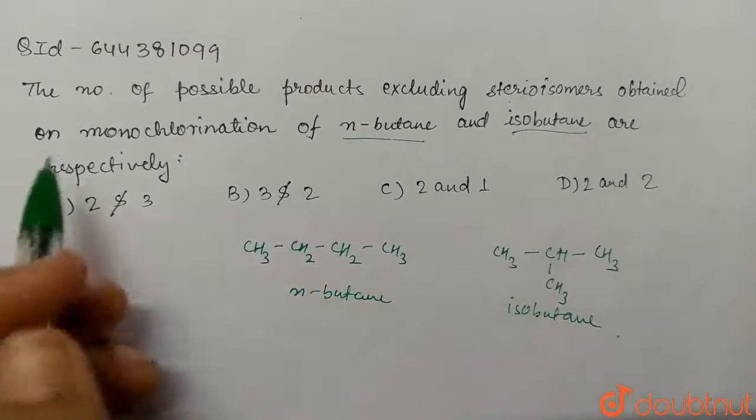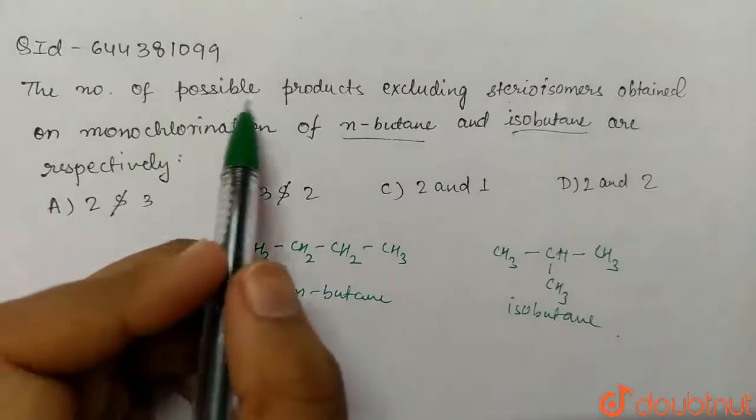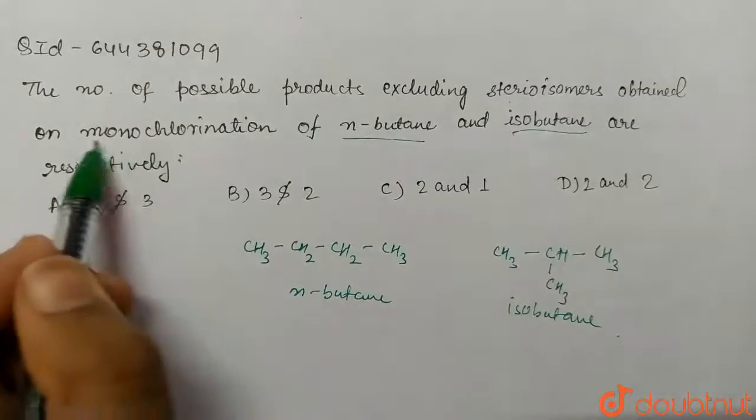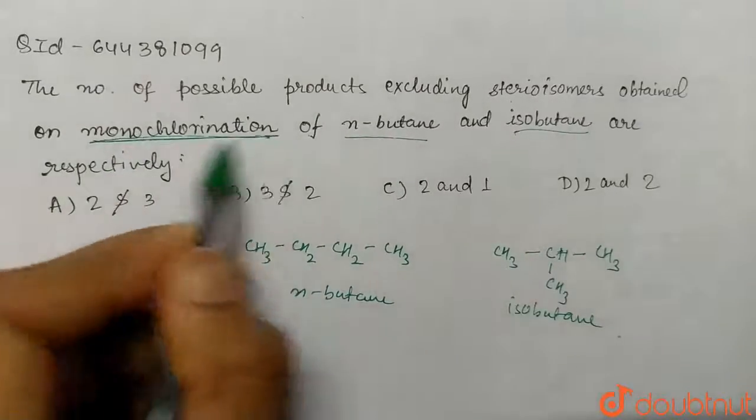In this question we have to find the total number of possible products formed on monochlorination. So what is monochlorination?